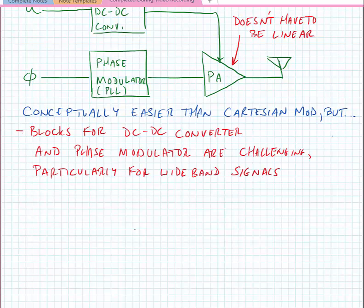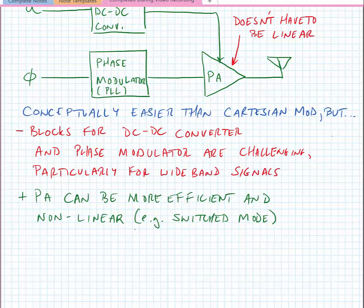Part of the reason that this is a bit more challenging is that the blocks for the dc to dc converter and phase modulator are more challenging to design particularly for wideband signals. The power amplifier can be more efficient because we can keep it close to its saturated output power, and it can also be non-linear which means that it can be a switched mode power amplifier.